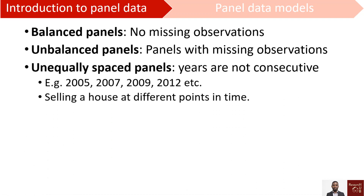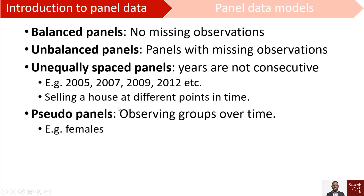We also have unequally spaced panels, where we don't follow observations for all years — we only have observations for some years depending on the variable of interest. For example, say we sell a house in 2005, so we have price information for that year, and then again in 2007. If we don't sell a house every year, the data will have gaps in some years.